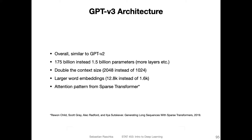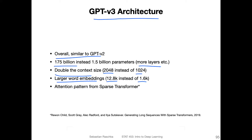The architecture overall is again similar to GPT version two, but of course it's now much bigger — there are also more layers and so forth. They also doubled the context size, so instead of 1024 input tokens they now have 2048. The word embeddings are also substantially larger, going from around 1,600 to approximately 12,800. And to make things feasible computationally, they use an attention pattern from the sparse transformer.